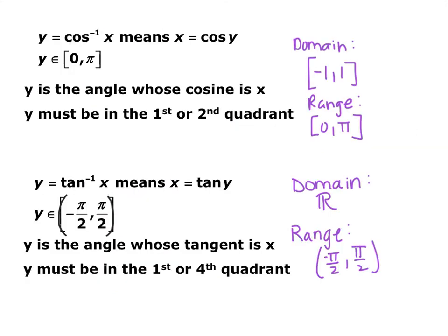Here are notes on cosine inverse and tangent inverse. For cosine inverse, the domain is negative one to one because cosine only goes between negative one and one. We limit the domain of cosine to create an inverse trig function by restricting it from zero to π. So instead of sine's range of negative π/2 to π/2, the range for cosine inverse is zero to π — you only get angles in the first and second quadrants.